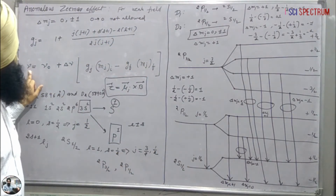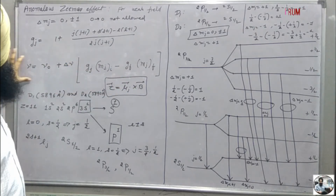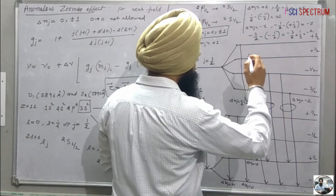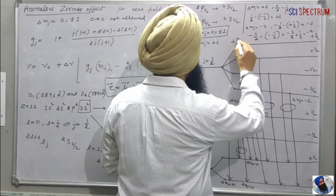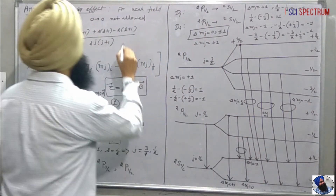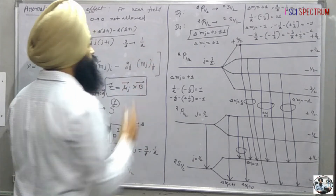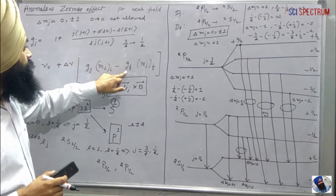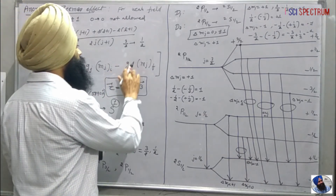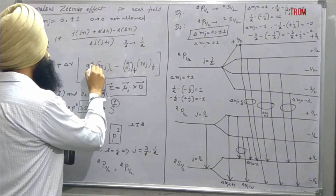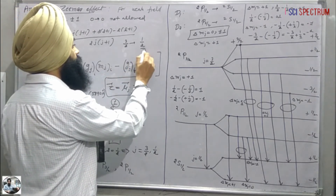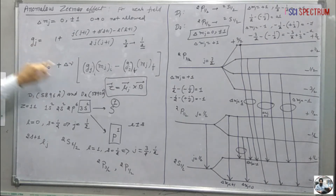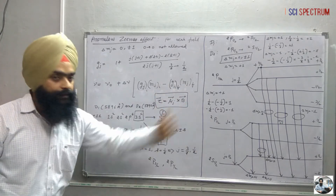To calculate the frequency, put these mj values into the frequency expression. For example, for the transition +3/2 to +1/2: find g_j corresponding to mj equals 3/2, then find g_j corresponding to mj equals 1/2 using the formula. By multiplying these values you can find the corresponding frequency for each spectral line.